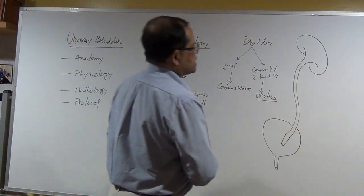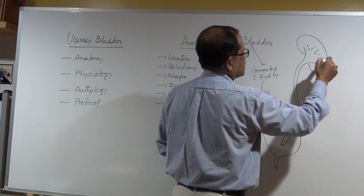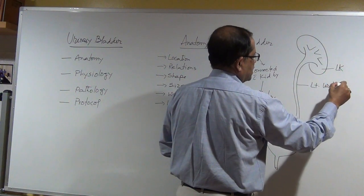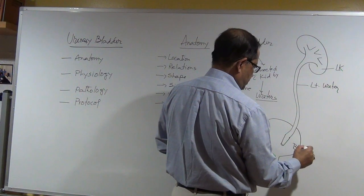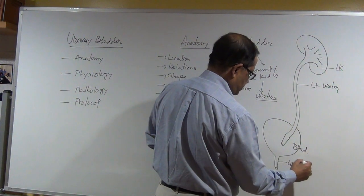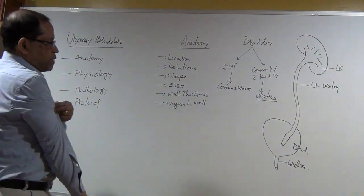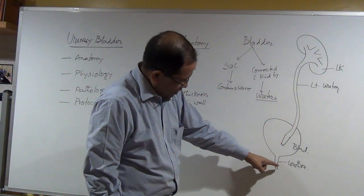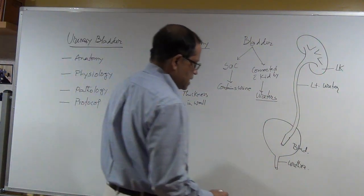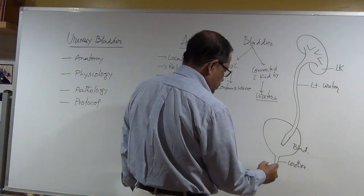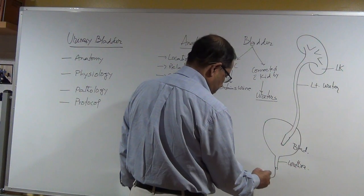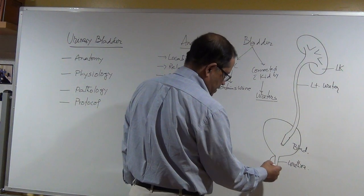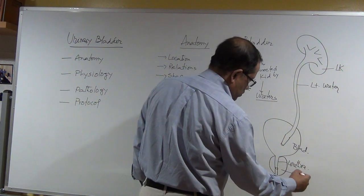If I draw the kidneys here — this is the left kidney, this is the left ureter, and this is the bladder. Now the bladder is connected to the kidney by the ureter. For the female ureter it enters directly, but for the male ureter it will pass by the prostate gland.